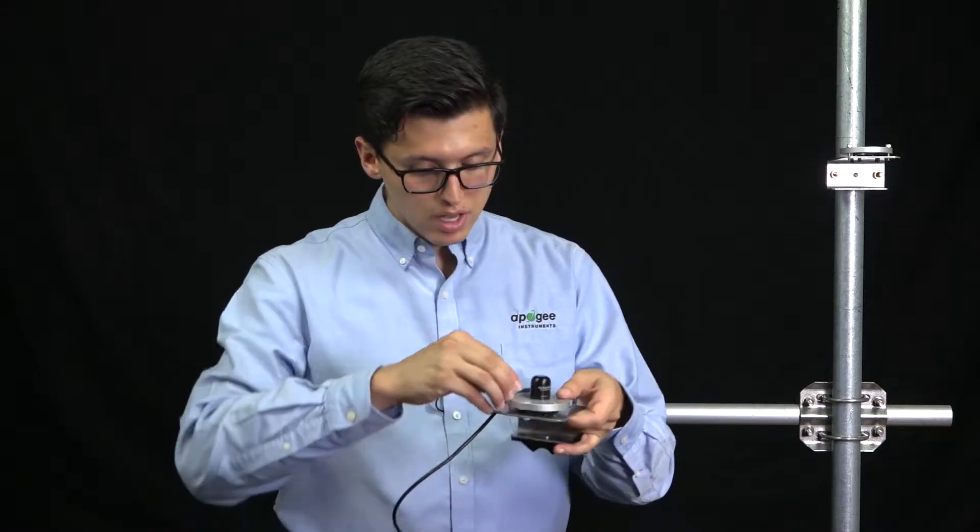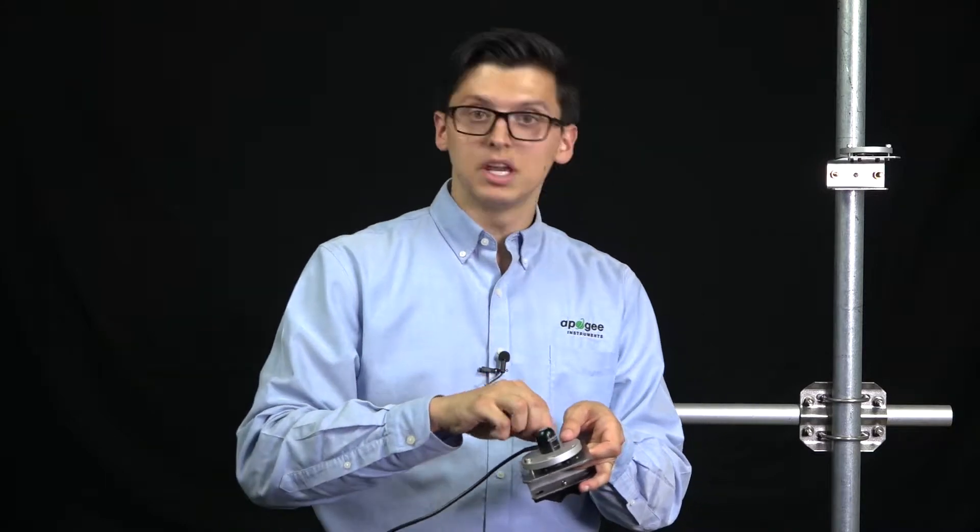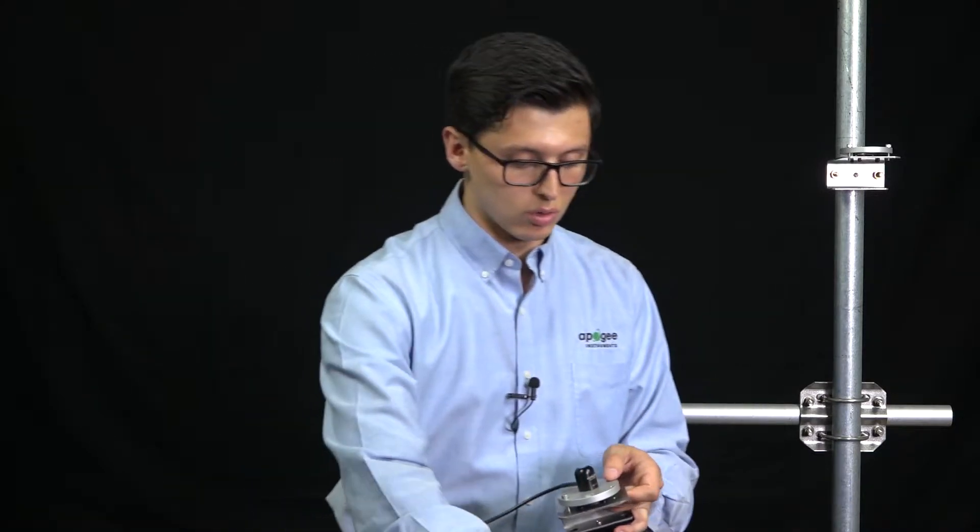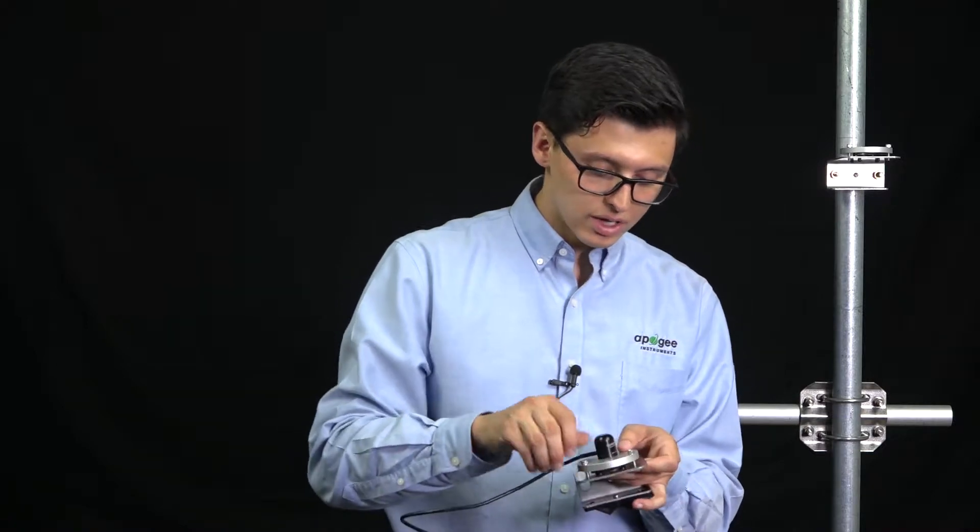Take your hex cap screws and fit them through your leveling plate and begin to thread them into your bracket. Once you have loosely finger tightened these screws,